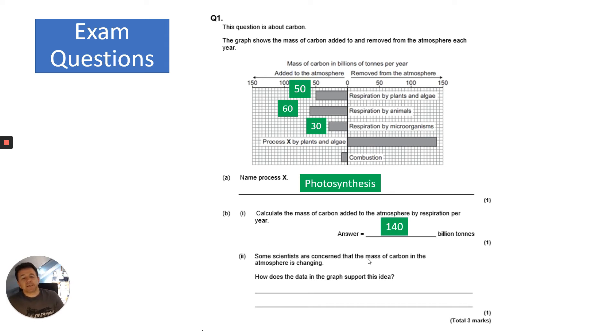Last question: some scientists are concerned that the mass of carbon in the atmosphere is changing. How does the data in the graph support this idea? You need to add up the carbon dioxide added to the atmosphere and removed. If I add up the left column it's 150, and the right column removed is 140. Therefore, 10 billion tons more of carbon dioxide is added than removed.